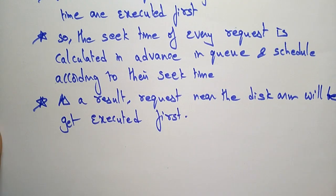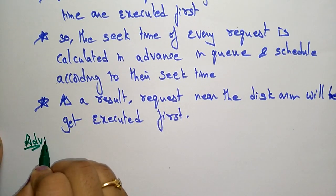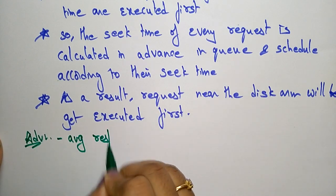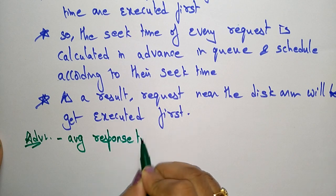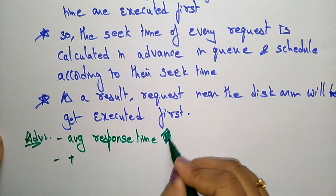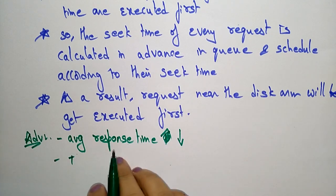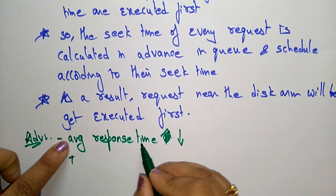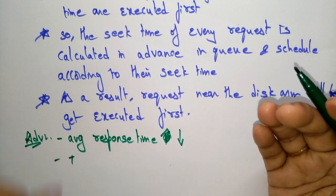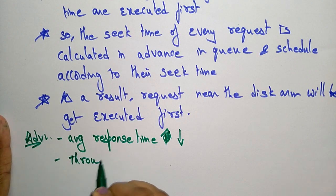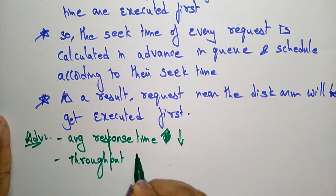The advantages of SSTF: the average response time is decreased when compared to First Come First Serve — it can respond faster. In First Come First Serve the average response time is increasing, but here the average response time will be decreased. Throughput will also be increased.